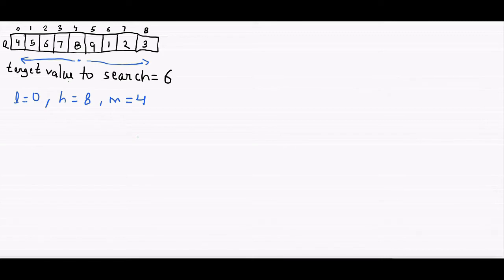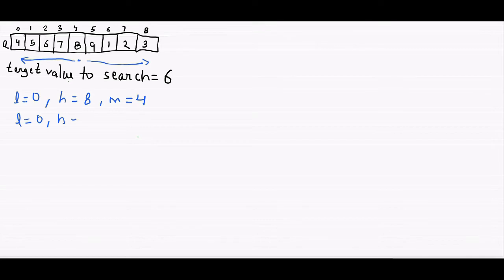We can check if the left half is sorted by comparing a[0] and a[4]. If a[0] is less than or equal to a[4], then the left part is sorted. If a[4] is less than or equal to a[8] — that is, a[mid] is less than or equal to a[high] — then the right part is sorted. Here in this case the left part is sorted. Now we check if our target value is greater than or equal to a[0] and smaller than or equal to a[4]. If so, the target is in the left part, so we trim the right part: high becomes mid minus 1, which is 3, and mid becomes (0 + 3) / 2 = 1.